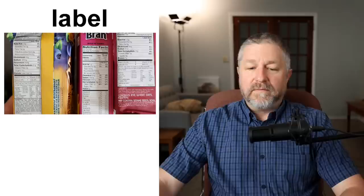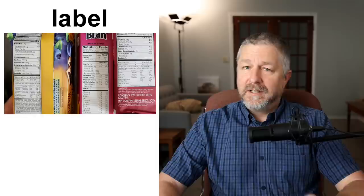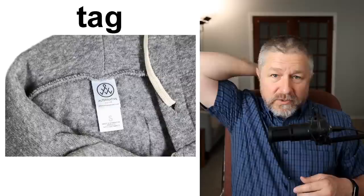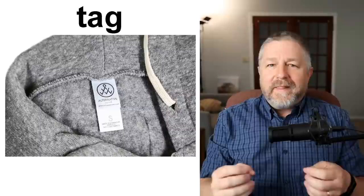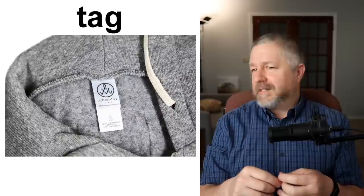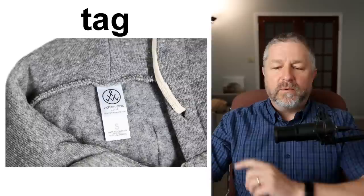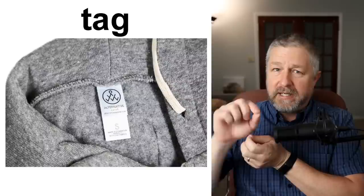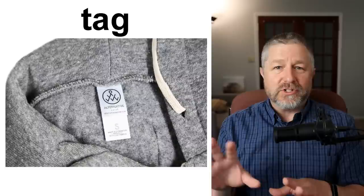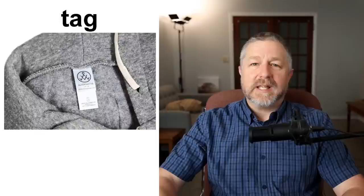A label is something you would find on a box or a can of food. Next: a tag. Most shirts have a tag in the back. When the tag is too big it bothers me, so I often cut them out. A tag can be sewn into a shirt, or it can hang from a piece of clothing with a string. The most common example would be when you buy a shirt — it will usually have a tag in it.